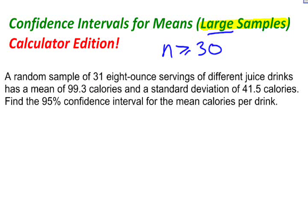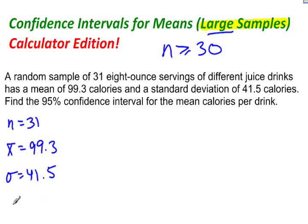The first thing I need to know is what is my sample size. Well, my sample size is 31. Then the second thing I need to know is what is my mean. The sample mean is 99.3 calories. I also need to know the standard deviation, which is 41.5 calories. And finally, the confidence level. My confidence level is equal to 95%.